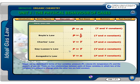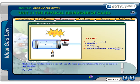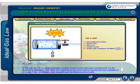Gases can be described in terms of four variables: pressure P, volume V, temperature T, and the amount of gas N. There are five relationships between pairs of these variables in which two of the variables are allowed to change while the other two are held constant. Each of these relationships is a special case of a more general relationship known as the ideal gas equation: PV equals nRT. In this equation, R is a proportionality constant known as the ideal gas constant and T is the absolute temperature. The value of R depends on the units used to express the four variables P, V, N, and T.